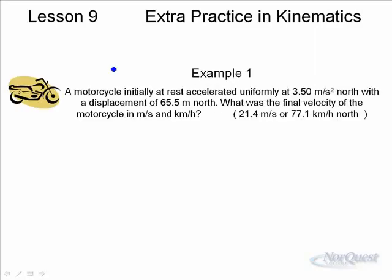So example number one, a motorcycle initially at rest accelerated uniformly at 3.5 meters per second squared north with a displacement of 65.5 meters. What is the final velocity of the motorcycle in meters per second and kilometers per hour?